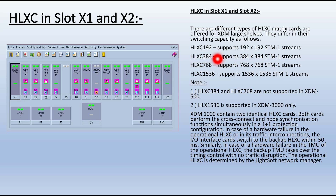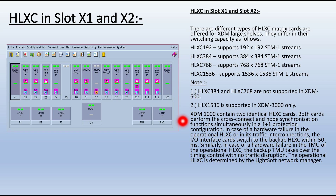HLXC 192 supports 192x192 STM1 streams. HLXC 384 supports 384x384 STM1 streams. HLXC 384 and 768 are not supported in HTM 500. HTM 500 supports the XIO card for the matrix card. HLXC 1536 is supported only in the HTM 3000. The HTM 1000 contains two identical HLXC cards. Both cards perform the cross-connect and node synchronization functions simultaneously in a 1+1 protection configuration.